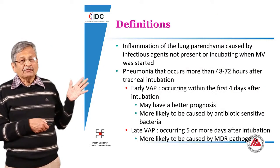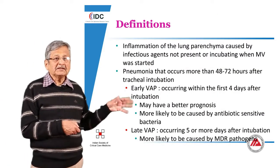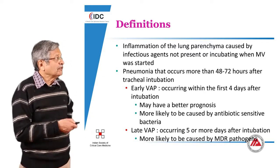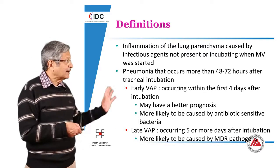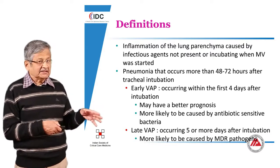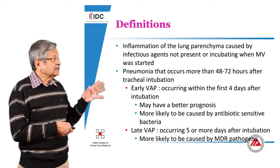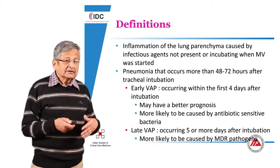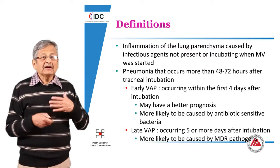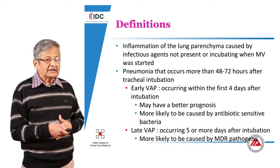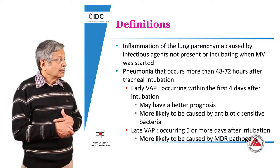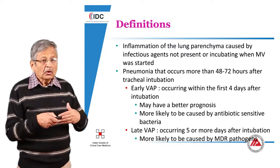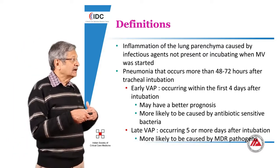Starting with the definition of ventilator associated pneumonia: theoretically, it is an inflammation of the lung parenchyma caused by infectious agents which are not present or incubating when the mechanical ventilation was started. That is the definition of ventilator associated pneumonia, and they are divided into two types — early onset and late onset.